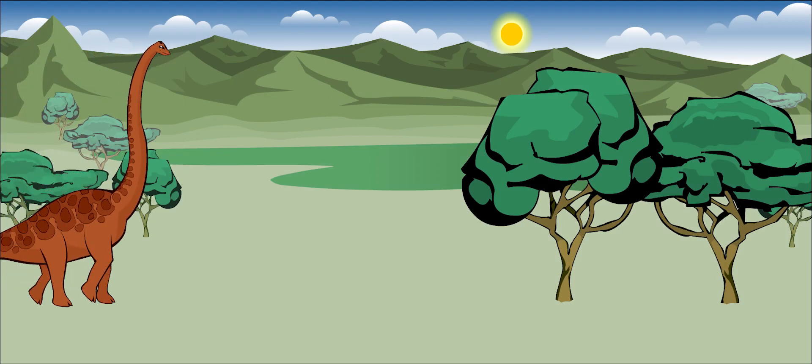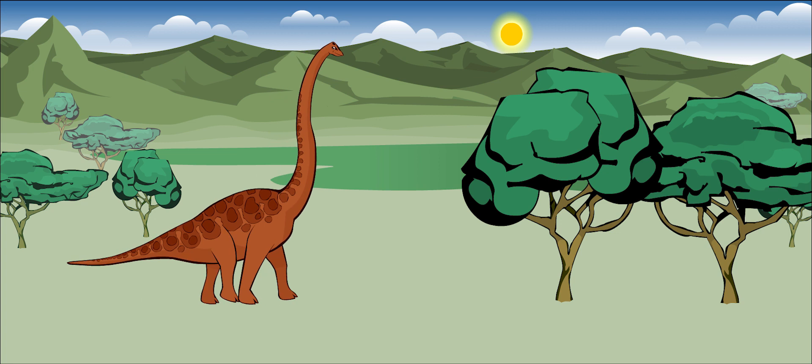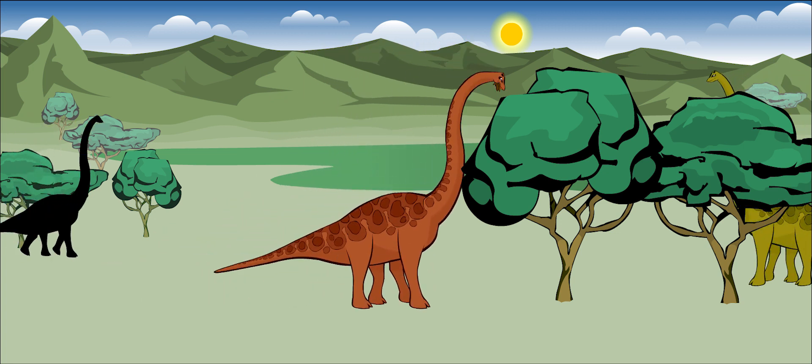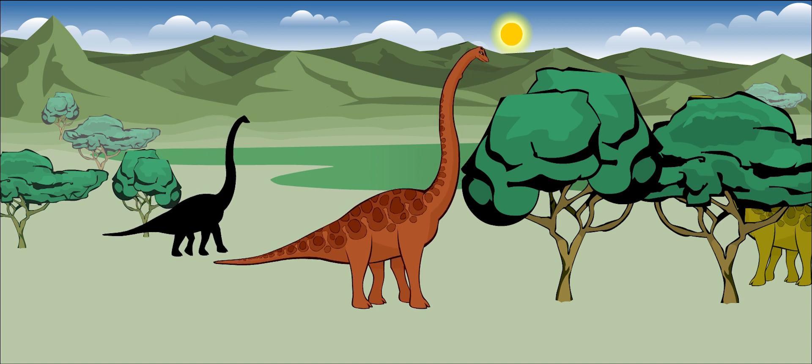Brachiosaurus was an herbivore, meaning that it only ate plants. It probably ate the tops of tall trees with its large, chisel-shaped teeth. It swallowed its food whole without chewing it.